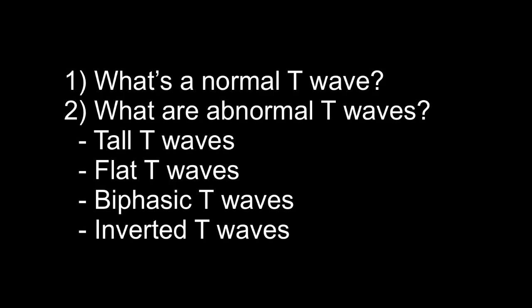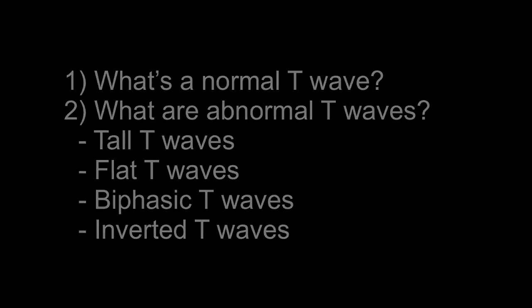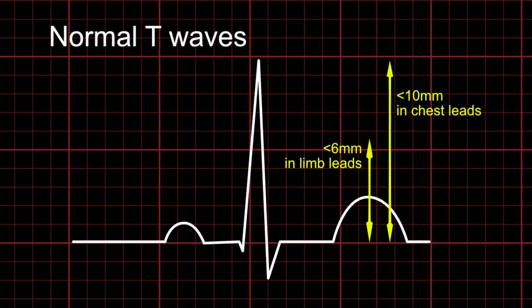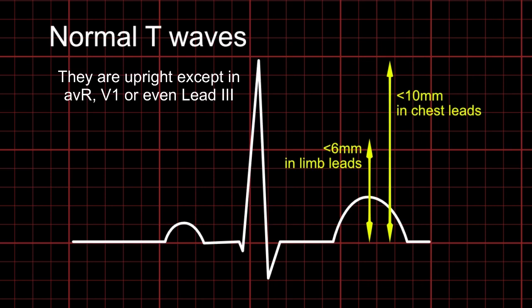Firstly, what's a normal T wave? Second, what are the abnormal T waves, where we'll talk about tall T waves, flat T waves, biphasic T waves, and inverted T waves. So what's a normal T wave? Normal T waves are usually less than 6 mm of amplitude in limb leads and less than 10 mm of amplitude in chest leads.